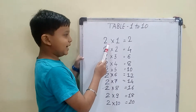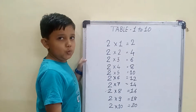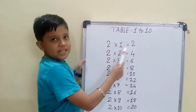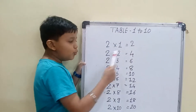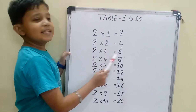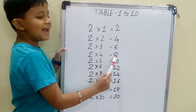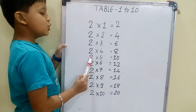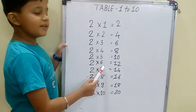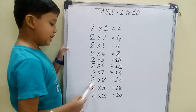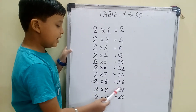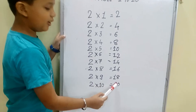Our second table is the table of 2. I speak this table. 2 one is 2, 2 two is 4, 2 three is 6, 2 four is 8, 2 five is 10, 2 six is 12, 2 seven is 14, 2 eight is 16, 2 nine is 18, 2 ten is 20.